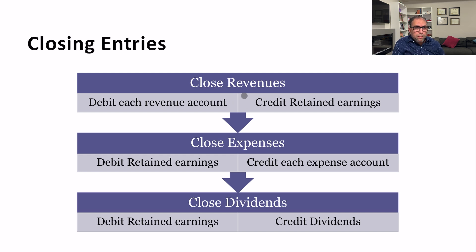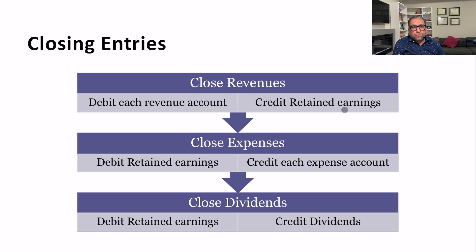To close the revenue accounts: the normal balance of a revenue account is a credit, so to make it zero we debit each revenue account by the same value. The credit entry goes to retained earnings. To close expense accounts: the normal balance of expense accounts is a debit balance, so we credit each expense account and debit retained earnings.